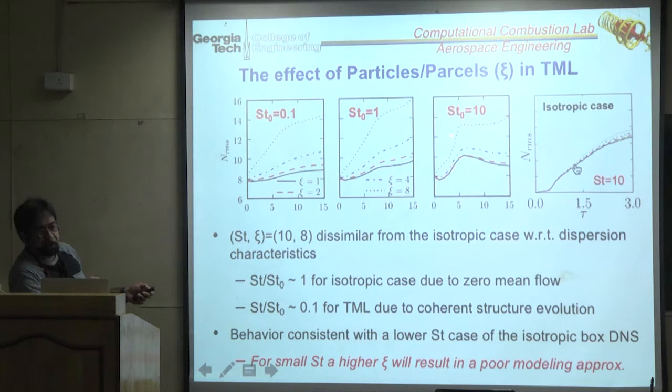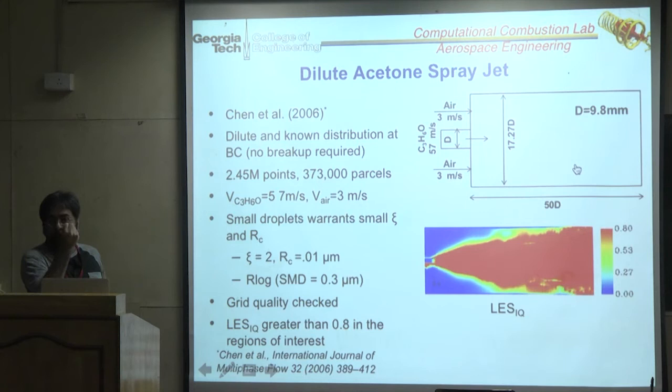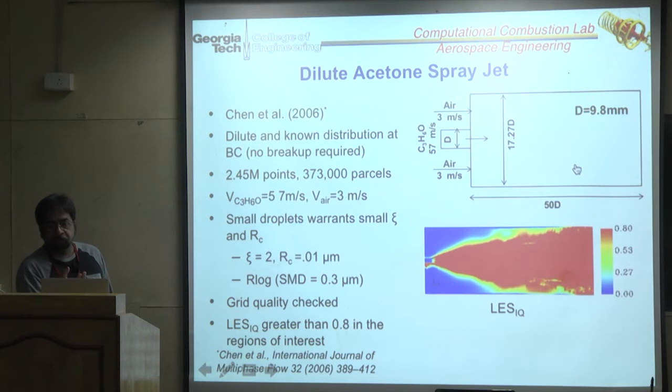Vaporization challenge in sprays: particles shrink from their initial size (e.g., 10 microns) toward zero as they vaporize. Ideally you'd track them to zero microns, but the particle time step scales with size squared — as particles get very small, the time step constraint becomes extremely severe.